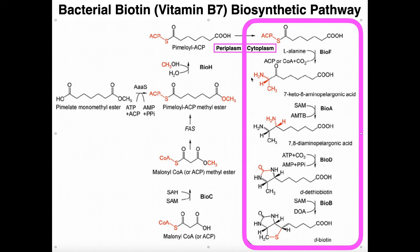To generate biotin, we have to first generate this molecule called pimeloyl-ACP. This molecule is just a short fatty acid called pimeloate that's been bound to ACP through a thioester linkage. ACP is just a carrier for fatty acids, and we use that carrier to transport this somewhat hydrophobic fatty acid through a watery medium.